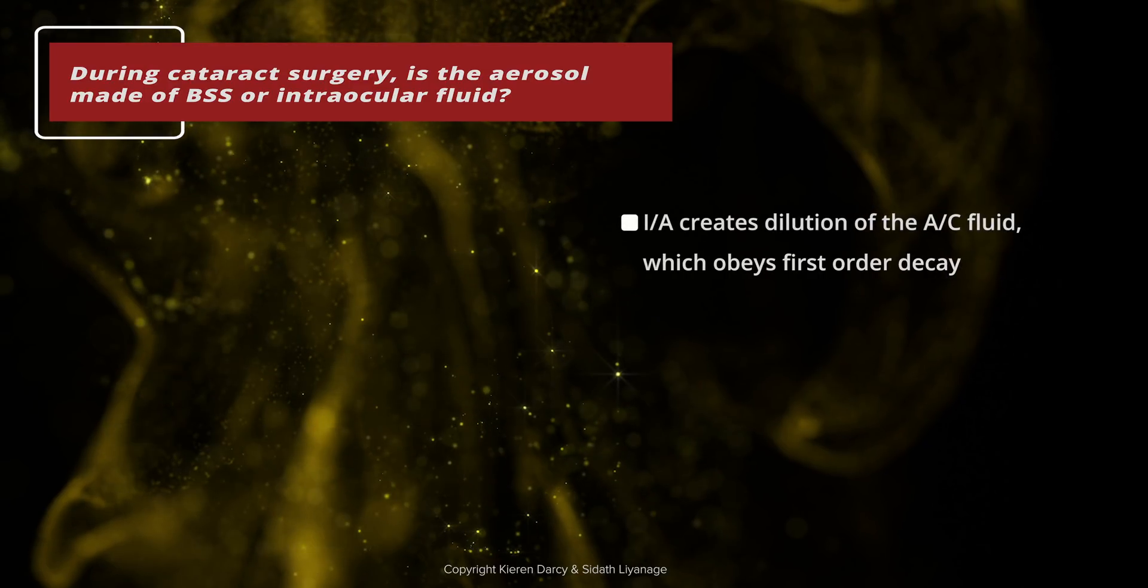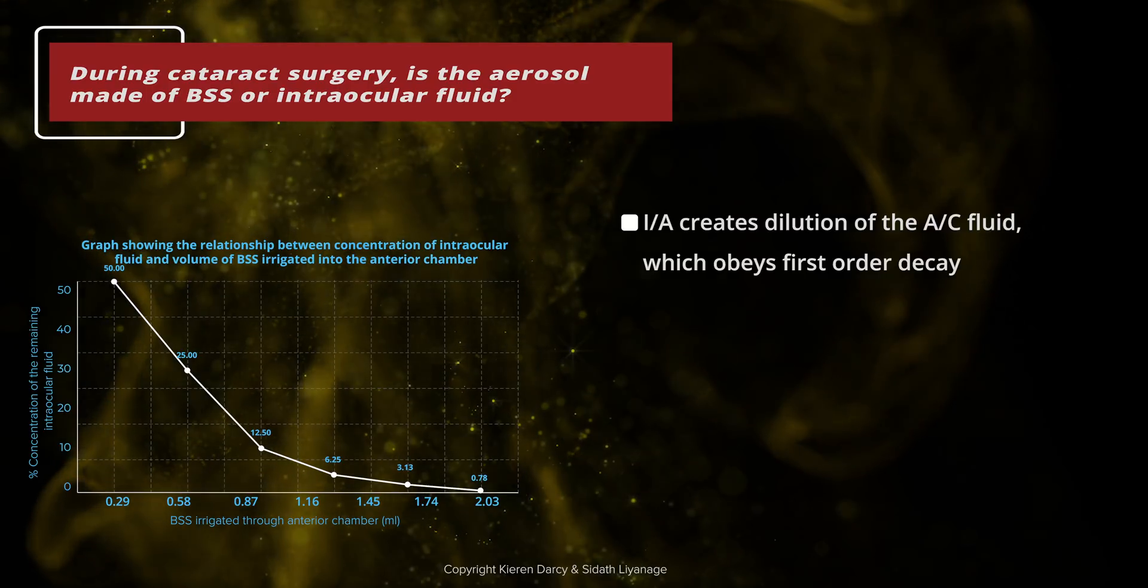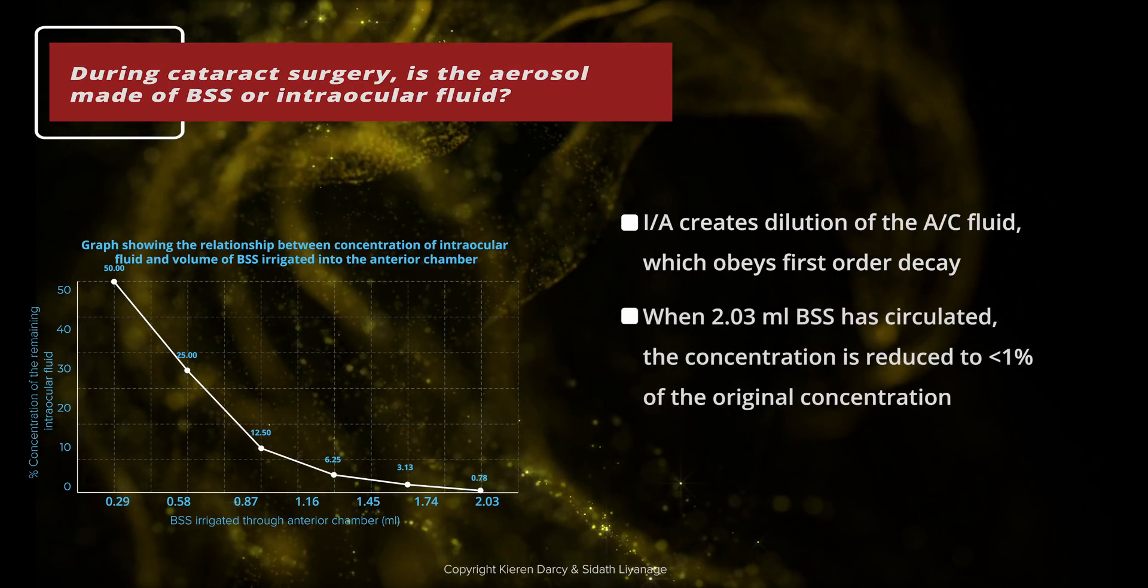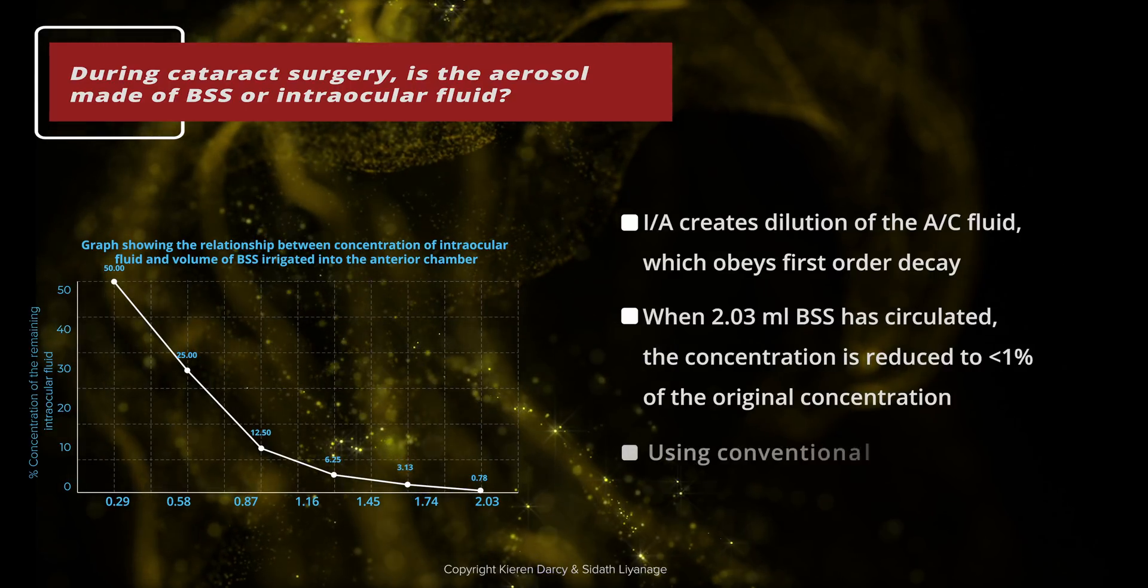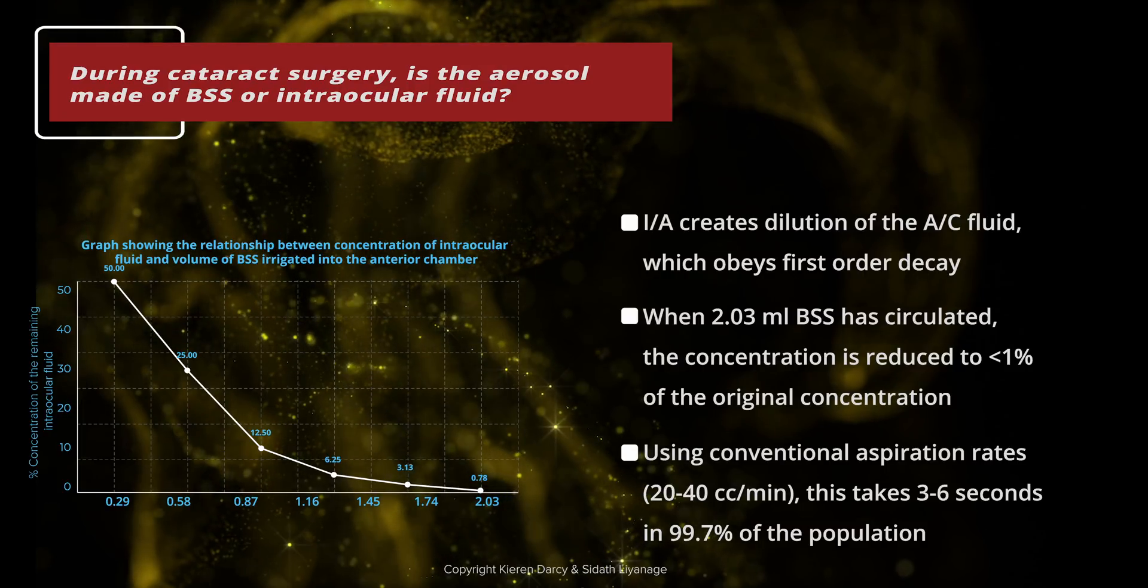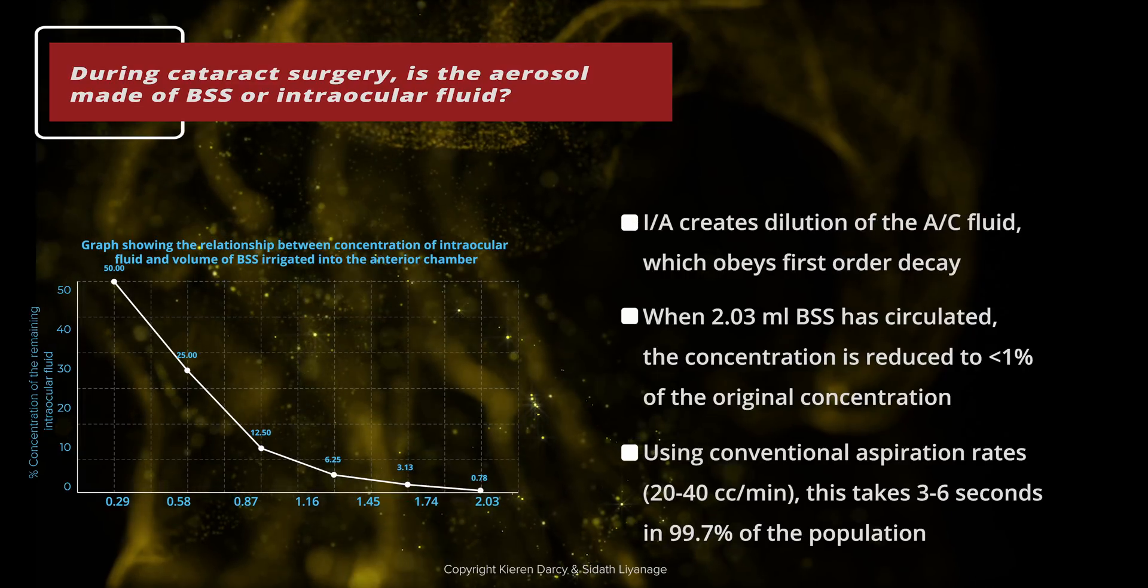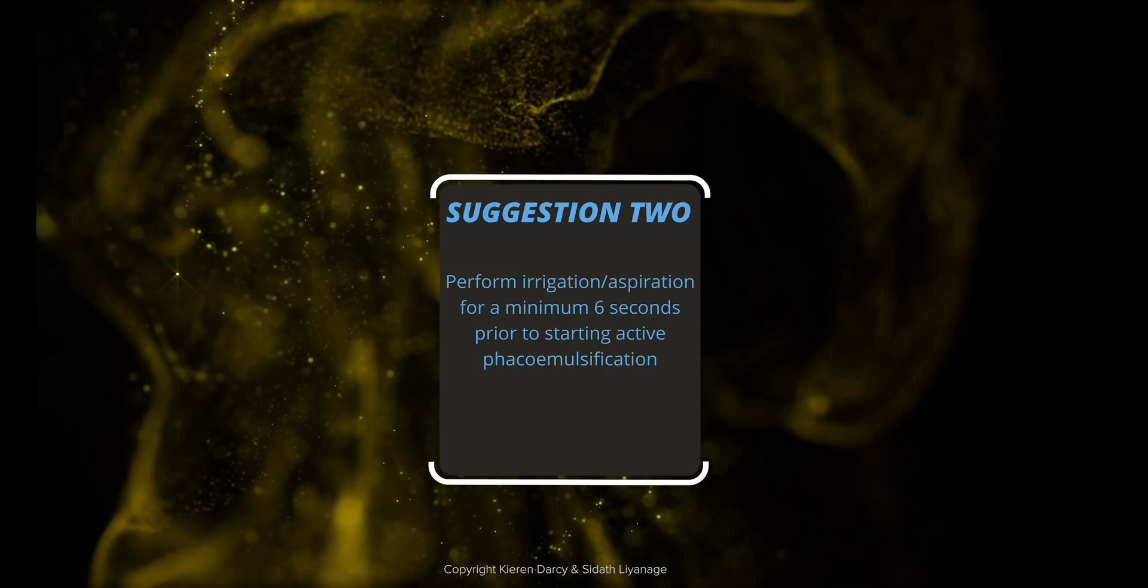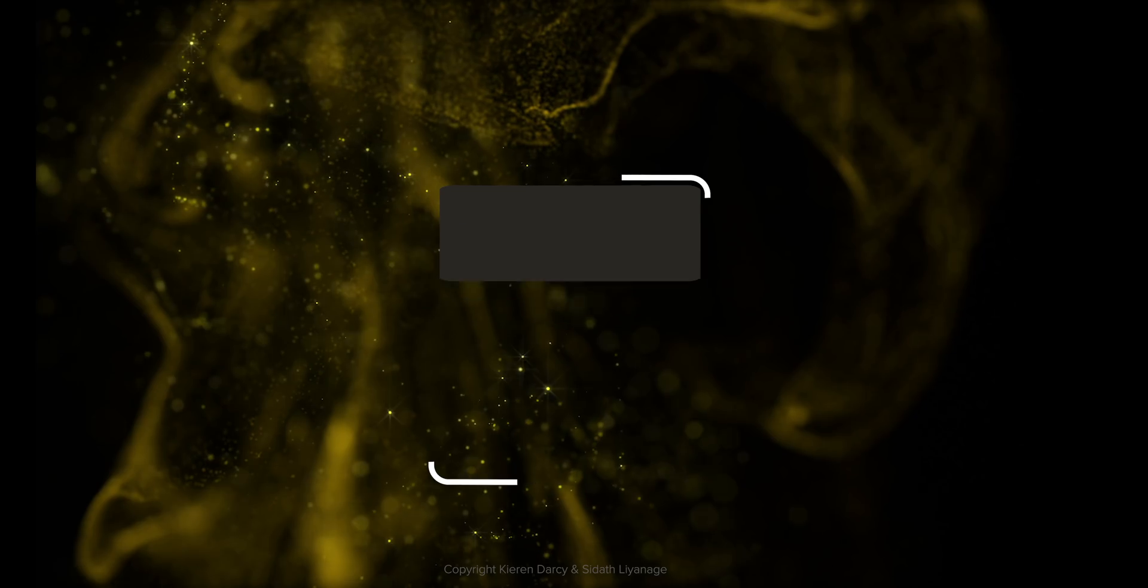When performing IA, there is a dilution effect from the balanced salt solution. This follows the rule of first-order decay. The graphical representation shows for 99.7% of the population, when 2.03 mils of BSS is circulated, the concentration is reduced to less than 1%. Conventional aspiration rates are between 20 to 40 cc per minute. Using the lower of these to achieve a less than 1% concentration would require 6 seconds of IA. Suggestion 2: perform irrigation aspiration for a minimum of 6 seconds prior to starting active phacoemulsification.